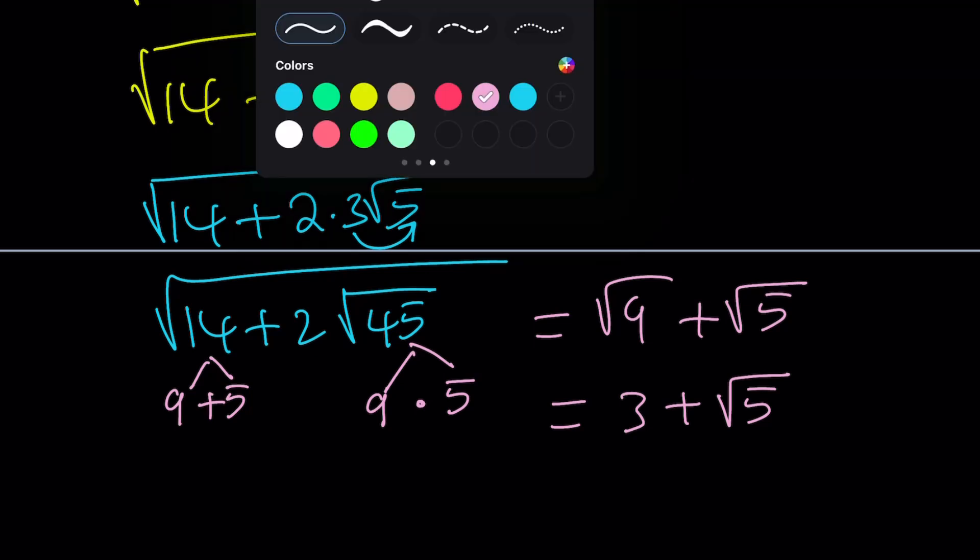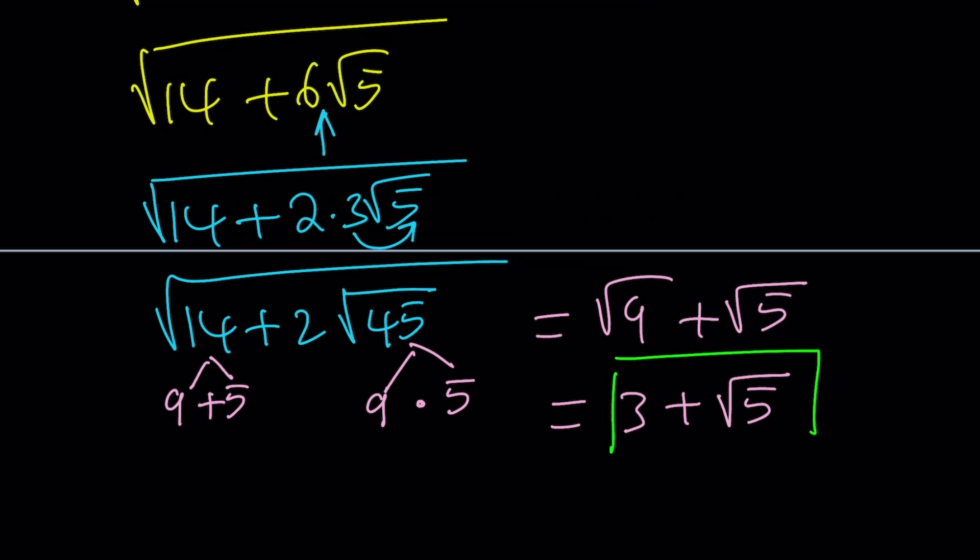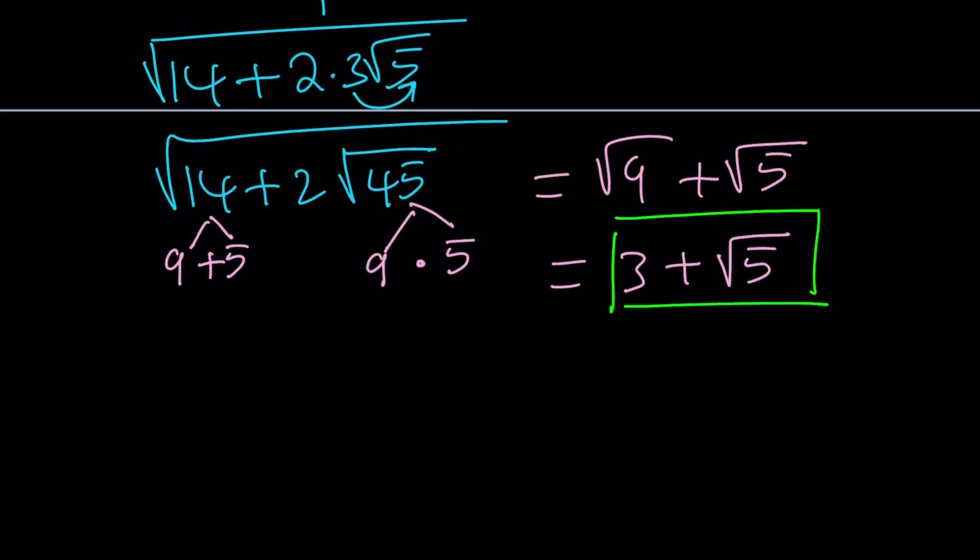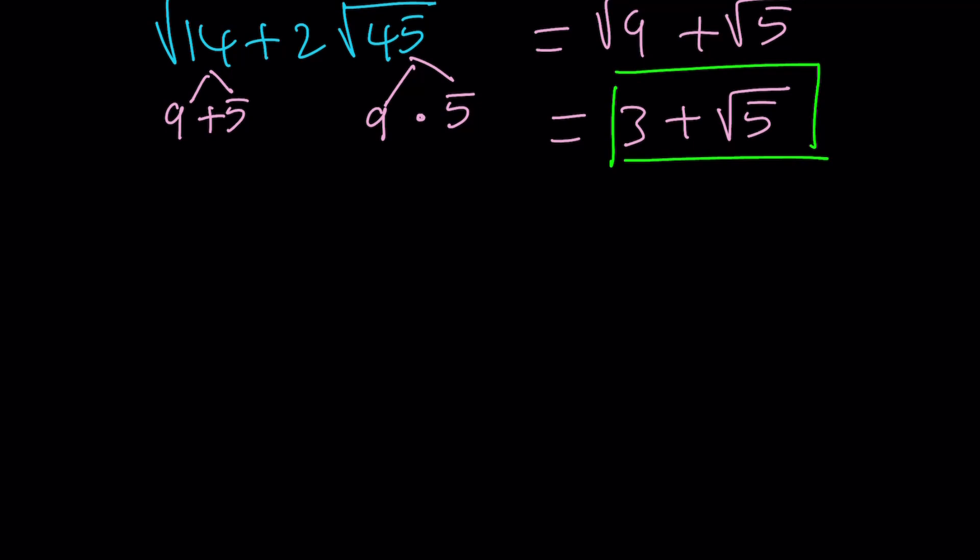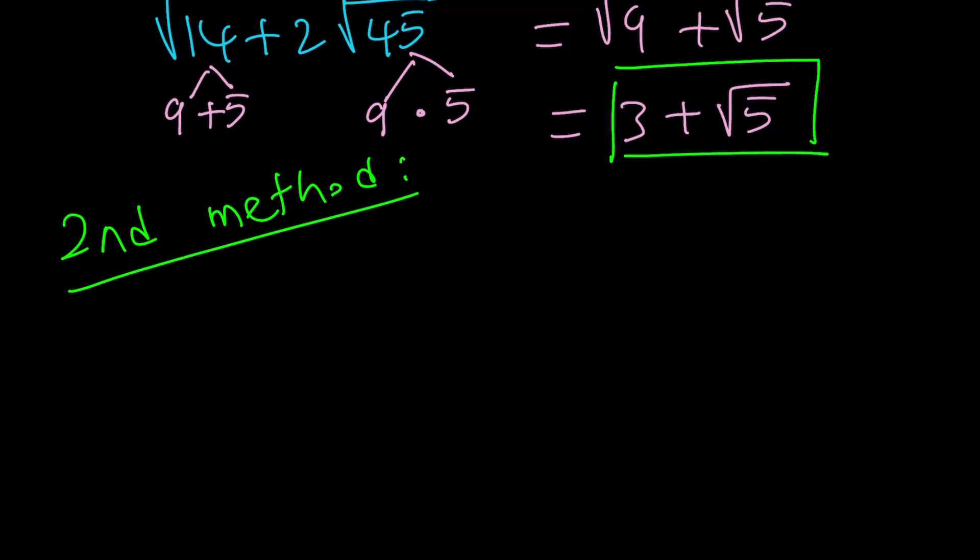Wow. The first method took a while to do, right? Let's see if the others are going to take this long. Anyways, the answer is 3 plus root 5. Now forget about the answer, and let's do the second method. Pretend you don't know the answer.